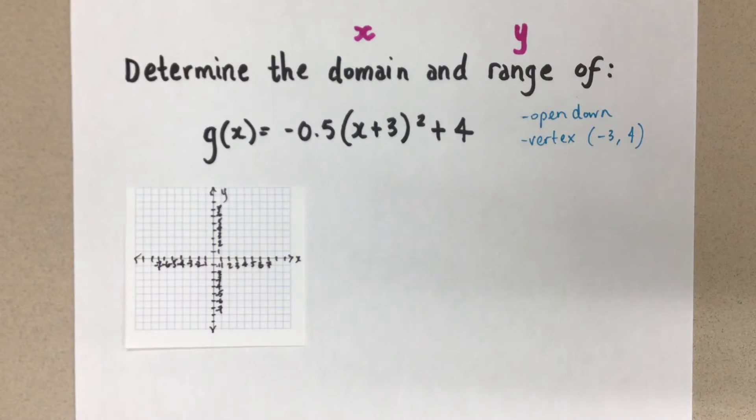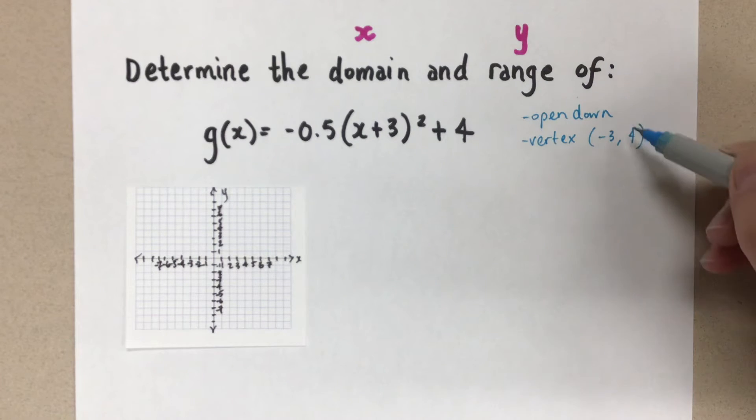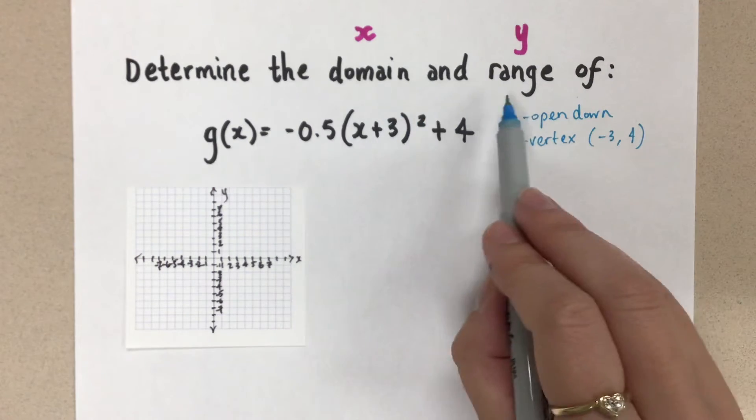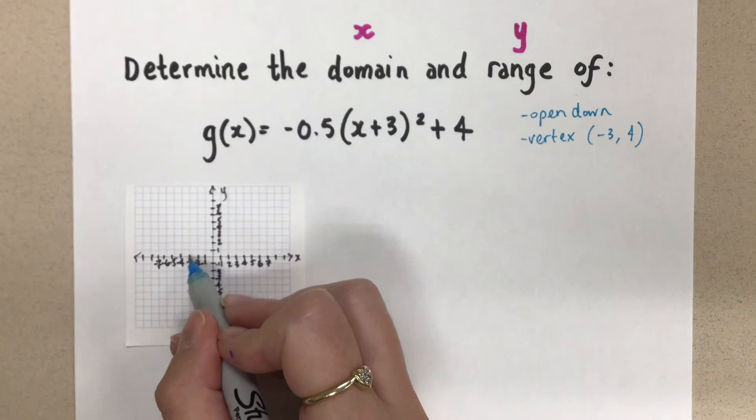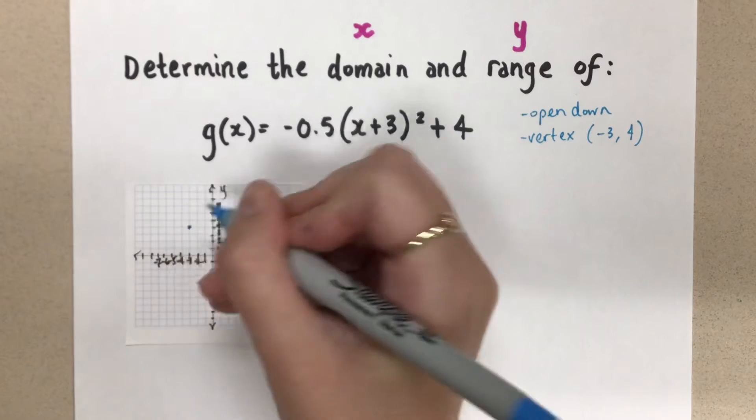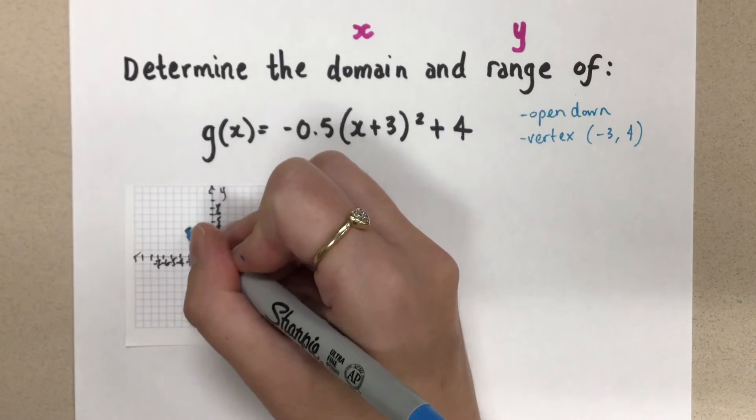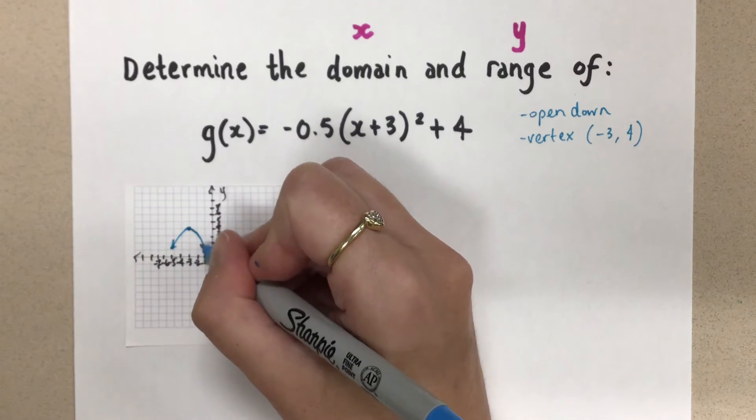So knowing that information, I can get a very rough sketch here. And I'm saying it's rough because I actually don't care about the zeros of this parabola. I don't care too much about the shape of it. But what I do care about is its direction of opening and its vertex, because that is going to help me determine the domain and range here. So if I put a vertex at negative three and four here, and then I kind of show that it opens down like this.